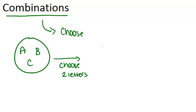So for example we could choose A and B, or we could choose A and C, or we could choose B and C, and that's it. There are only three ways to choose two letters from that set of three letters.